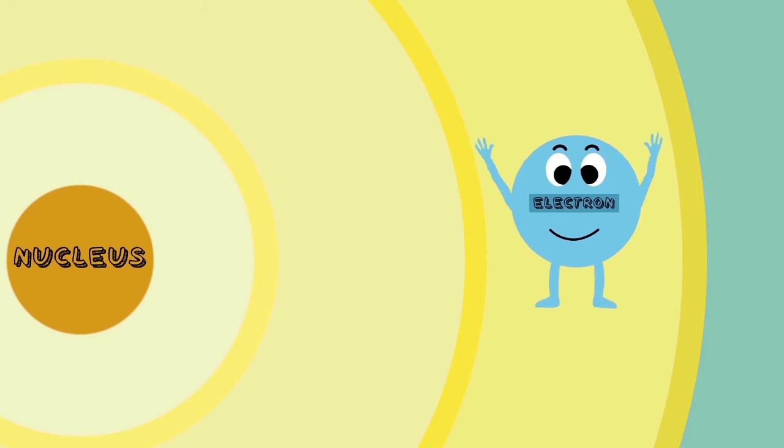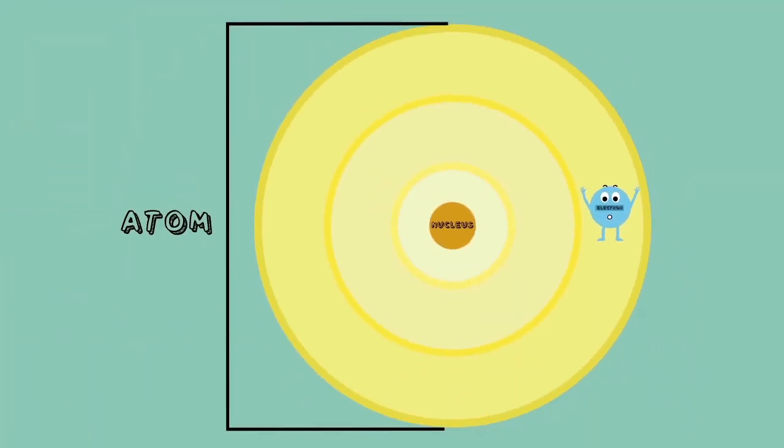It turns out that light has a lot to do with electrons. When electrons lose energy, they give off light. And when they take in light, they increase in energy.